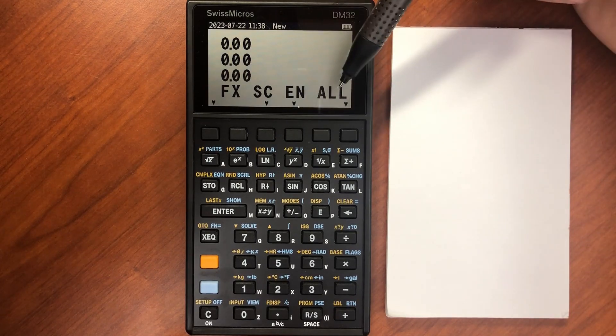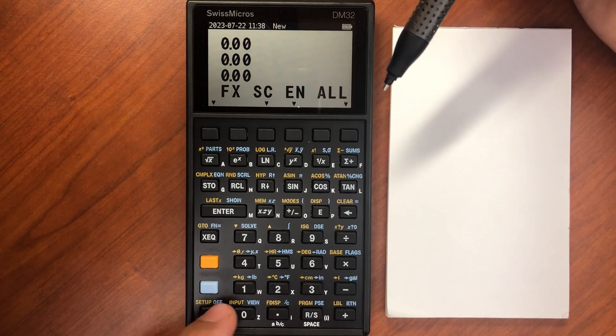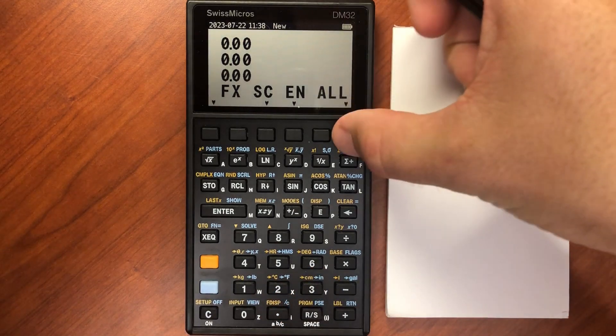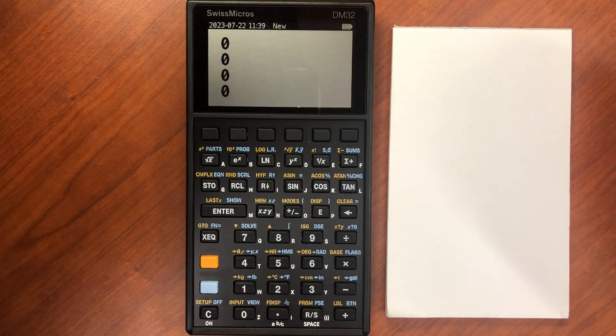this will show me that I can display my digits as fixed, scientific, engineering, or all. So let's say I choose all.